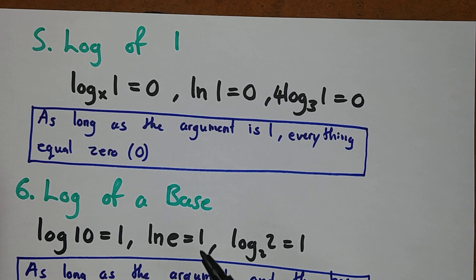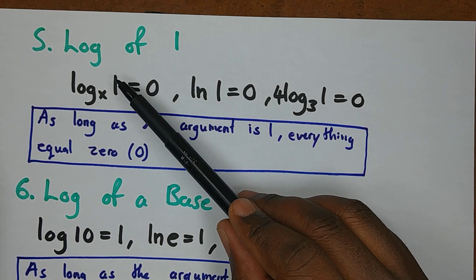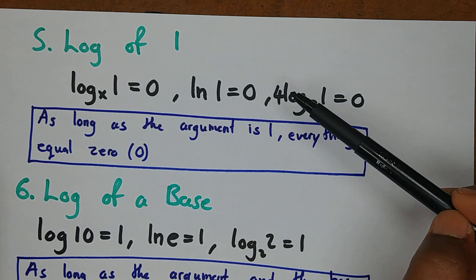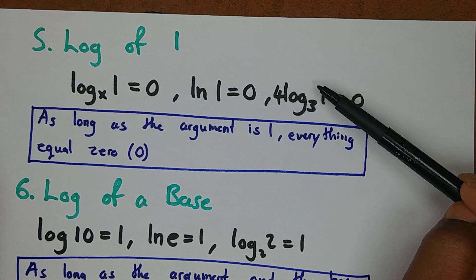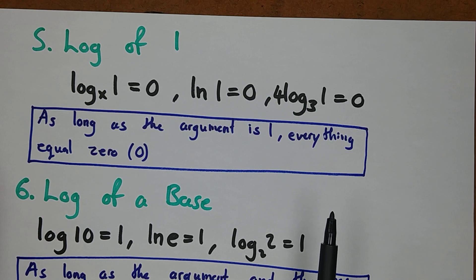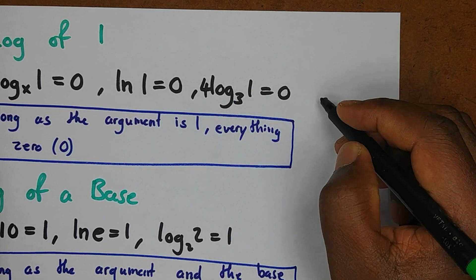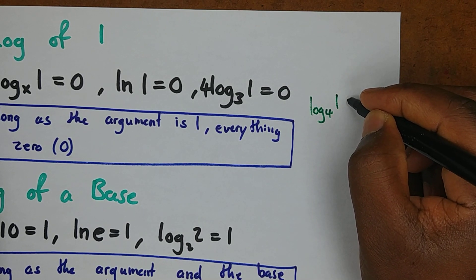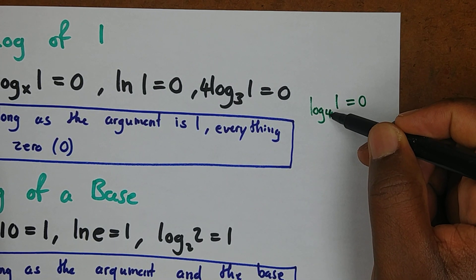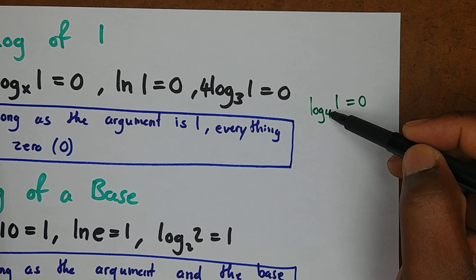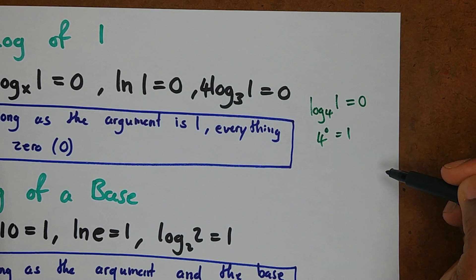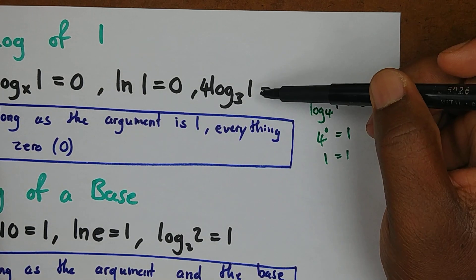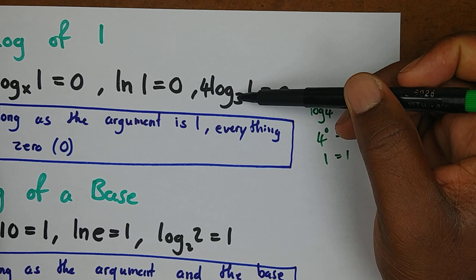The next rule is the log of one. This is straightforward: as long as the argument is 1, the whole expression equals zero. Why does it give zero? Using the Law of Equivalence, log base 4 of 1 equals 0 means 4 to the power 0 equals 1 — and any number raised to the power zero equals one. So regardless of the base, if the argument is 1, the result is always zero.